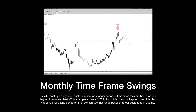In between the swing low and swing high in this example is two thousand seven hundred and sixty-five pips, and that took nine months to form. In between that though, there are multiple opportunities where you could have taken a long or even a short within that trading range — you just have to know what you're looking for.